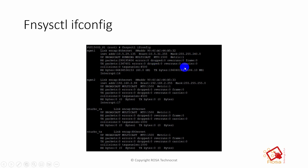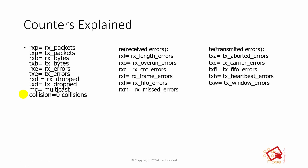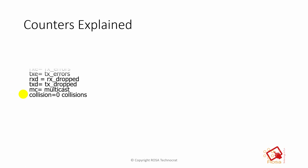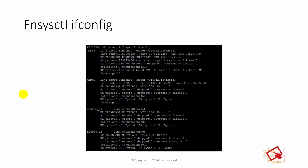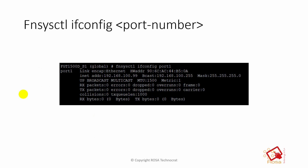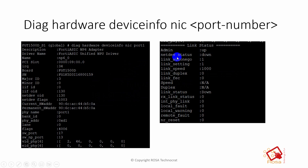CRC counters are available here as well, similar to the earlier 'diag netlink interface list' command. If you run 'fncctl ifconfig' without a port number it lists all interfaces with counters. If you specify a port number after ifconfig, it shows details only for that particular port.